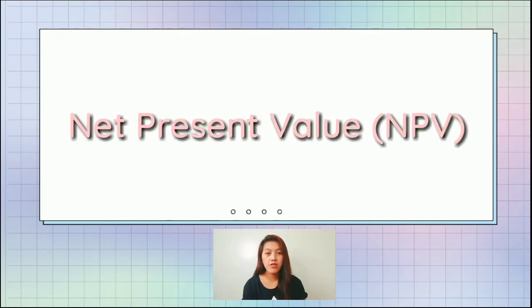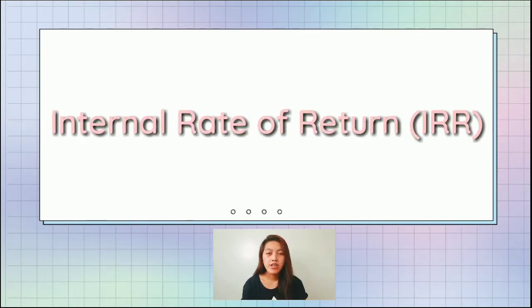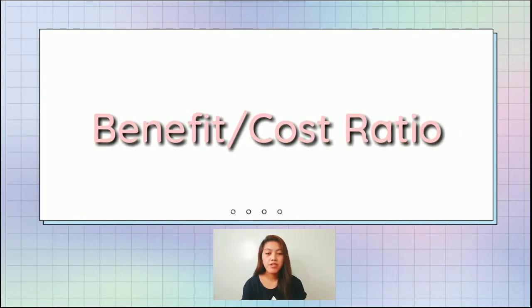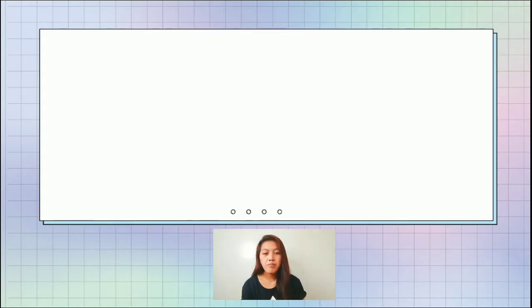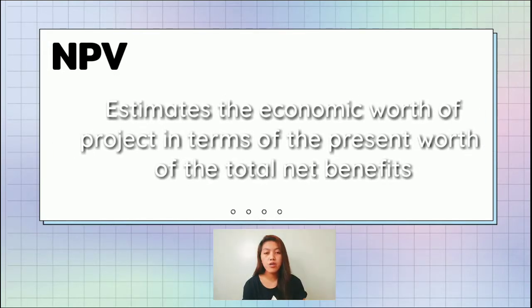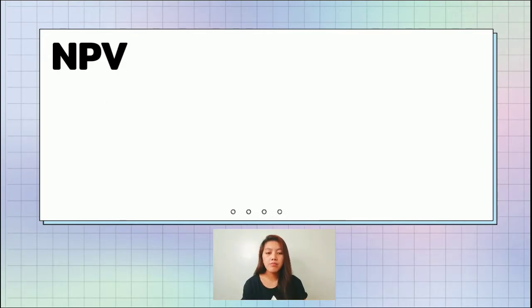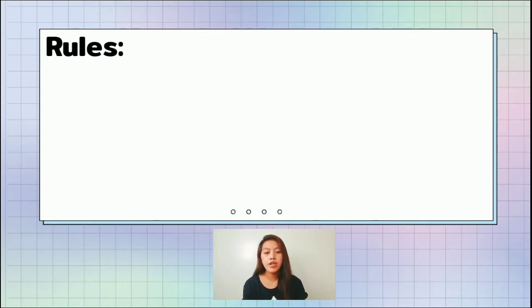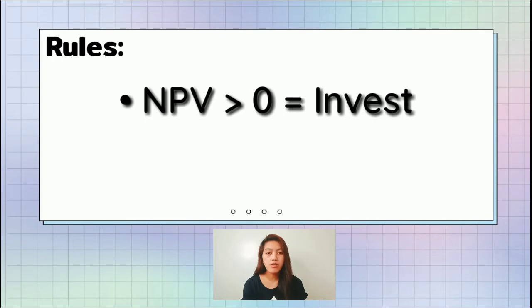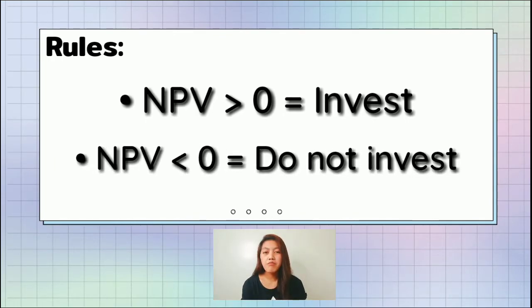Our next discussion is the use of economic indicators to assess basic economic viability. The economic indicators may be stated here are the net present value or NPV, the internal rate of return or IRR, and the benefit-cost ratio. NPV estimates the economic worth of the project in terms of the present worth of the total net benefits. It can be presented by the formula: net present value equals present value of cash inflows minus the present value of cash outflows. The most important rules to remember here are: if the NPV is greater than zero, then we invest in the project. But if the NPV is less than zero, then we do not invest in the project.